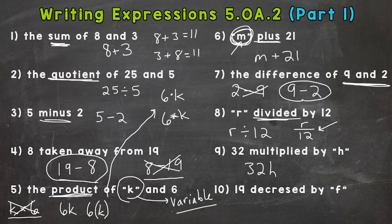And then number 10: 19 decreased by f. What operation do you think decreased means? Hopefully you're thinking subtraction: 19 - f.